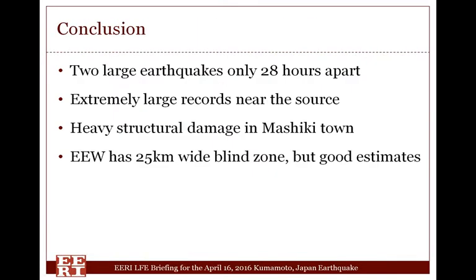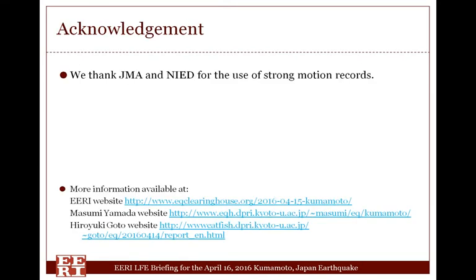In conclusion, we had two large earthquakes only 28 hours apart — moment magnitude 6.2 and 7.0, with the second being larger. Extremely large ground motion recordings were made near the source, with maximum velocity about 2 meters per second. Heavy structural damage occurred in Mashiki town, where more than 80% of wooden houses were totally collapsed in some small regions. JMA provided earthquake early warning, but there was a wide blind zone of about 25 kilometers with no warning before strong motion arrival. Overall, the estimation of ground shaking was reasonably good. We thank JMA and NIED for providing the strong motion records. Thank you very much for your attention.